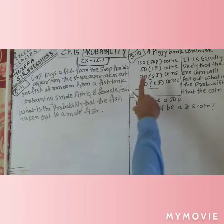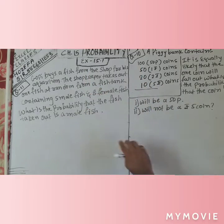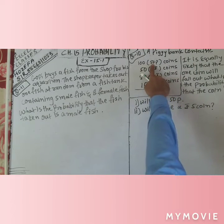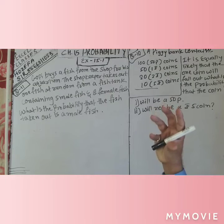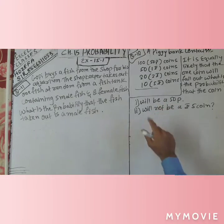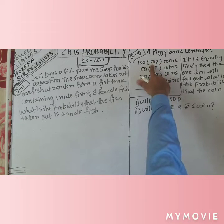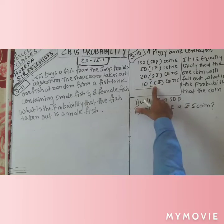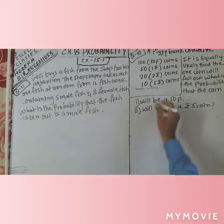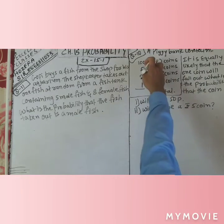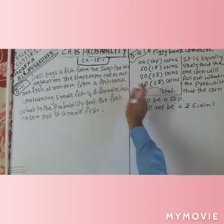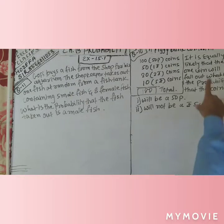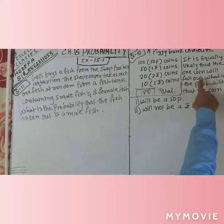Okay guys, now question number 10 of the probability chapter. A piggy bank contains 100 coins of 50 paise, 50 coins of 1 rupee, 20 coins of 2 rupees, and 10 coins of 5 rupees. So first of all, we have to find the total number of coins: 100 + 50 + 20 + 10 = 180 coins total. It is equally likely that one coin will fall out.